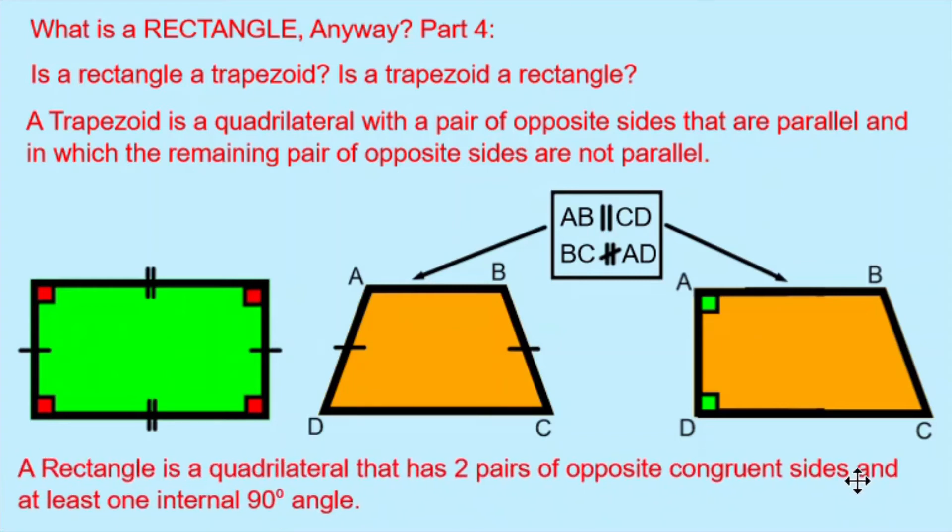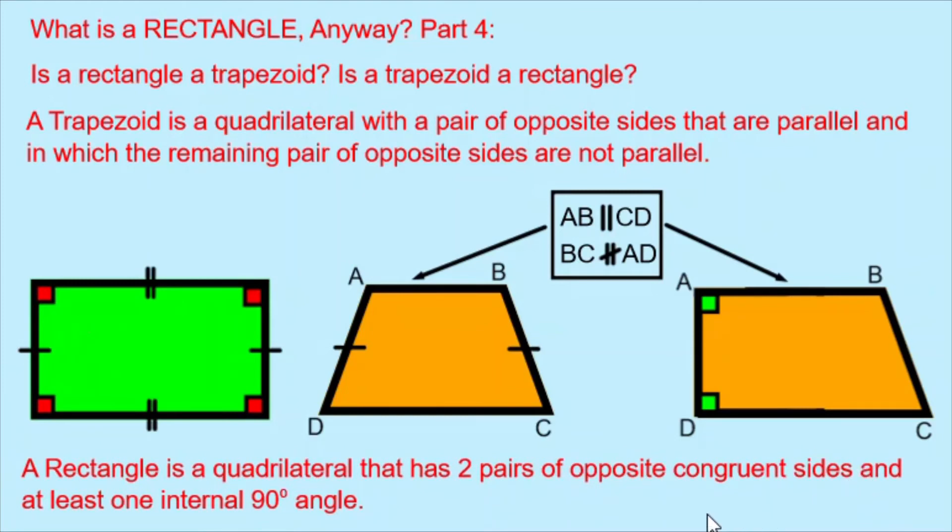Now let's look at the definition of a rectangle. It is a quadrilateral that has two pairs of opposite congruent sides and at least one internal 90 degree angle. My isosceles trapezoid cannot be a rectangle because it only has one pair of opposite congruent sides and it does not have any internal 90 degree angles.